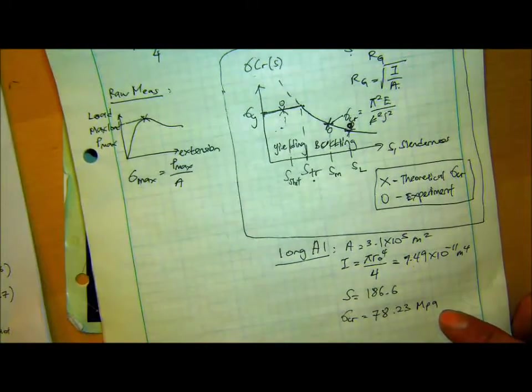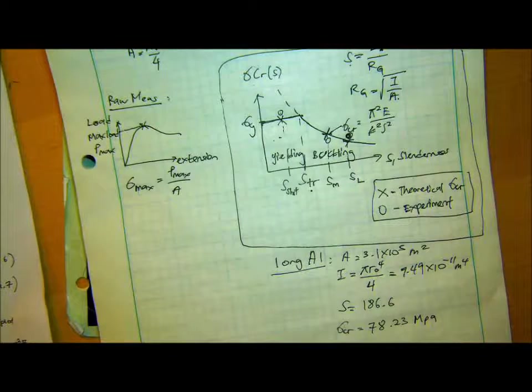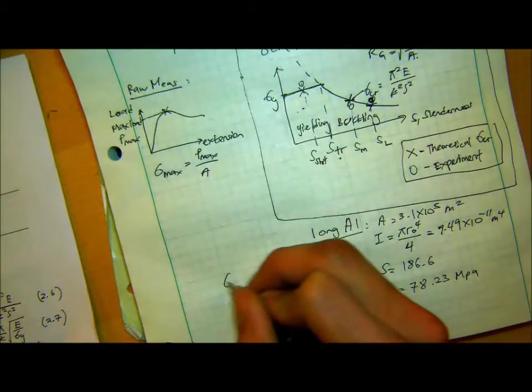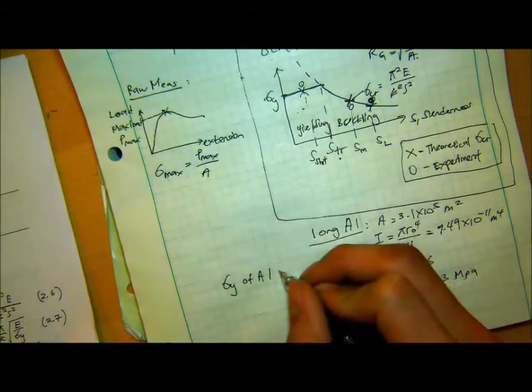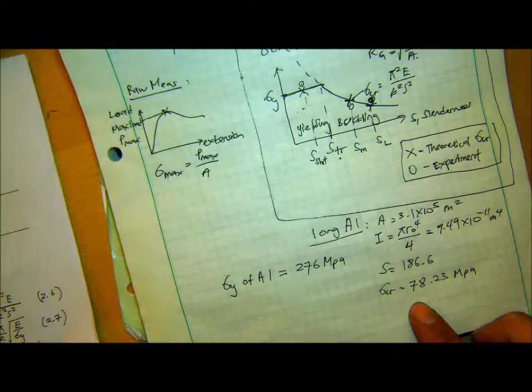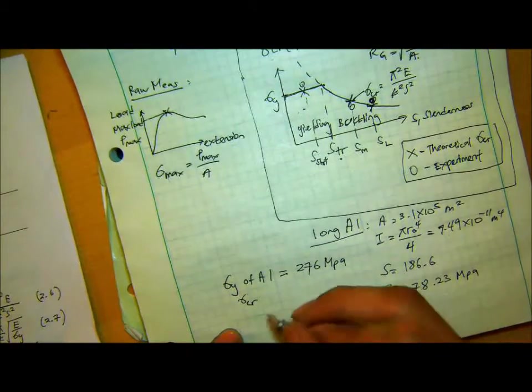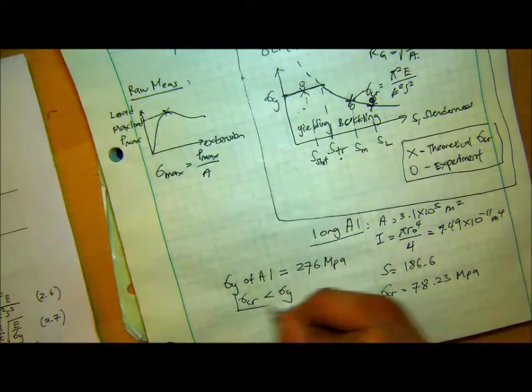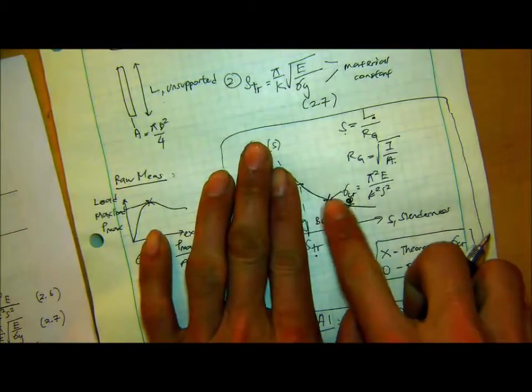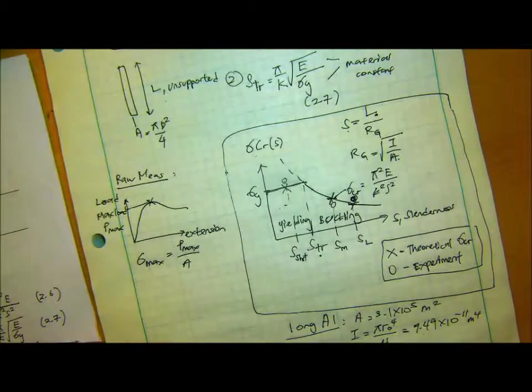So there's two ways to identify if it's buckling or not. One is looking at the critical stress. And the other one is looking at the slenderness S value. So for example, sigma yield of aluminum is 276 MPa. So what's immediately obvious is sigma critical for our long aluminum column is smaller than sigma yield. So if you look at here, if your sigma critical is below the sigma yield, it definitely falls in that region. So that's one way. It's predicted to buckle.